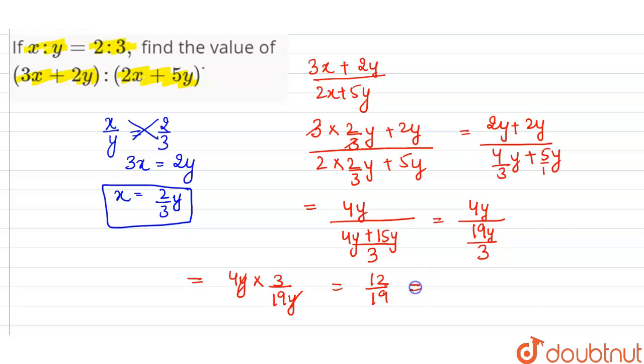12 divided by 19. So the ratio or the value of 3x plus 2y is to 2x plus 5y is 12 by 19, and this is the required solution.